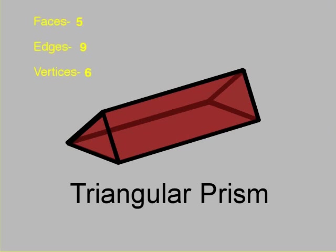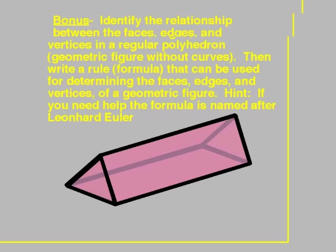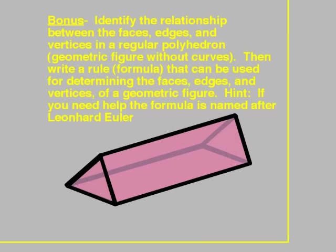Moving right along, onto a bonus. Well, I don't know about you, but I definitely noticed the relationship between the edges, faces, and sides of many of these different figures. In this lesson, I've decided to include a bonus. Your bonus is to identify the relationship between the faces, edges, and vertices in a regular polyhedron or a geometric figure without curves. Then write a rule or formula that can be used for determining the faces, edges, and vertices of a geometric figure. And if you need help, you can use the hint below. Hint, if you need help, the formula is named after Leonhard Euler. Good luck!